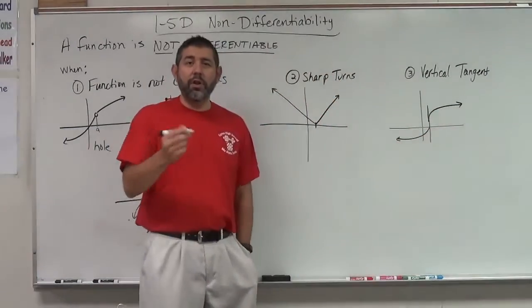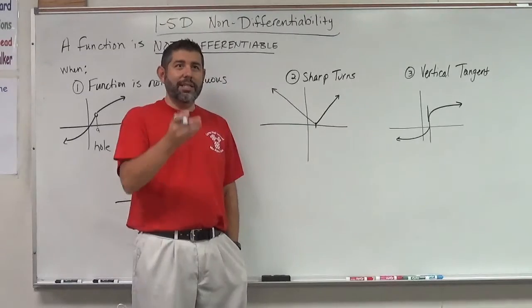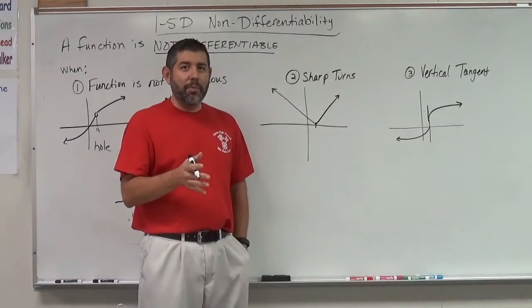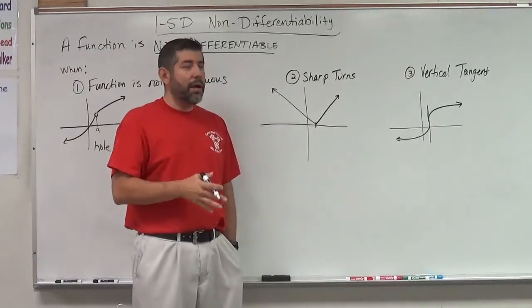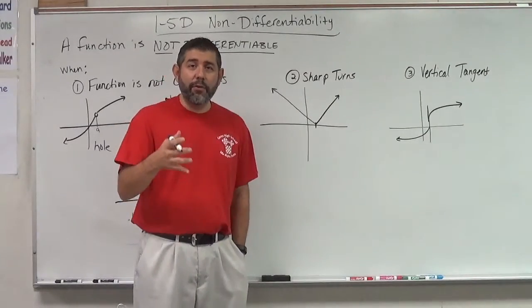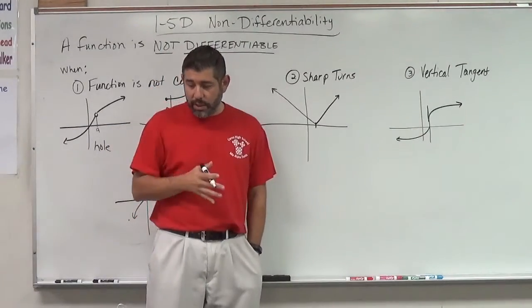And remember that the derivative is the slope of the tangent line. So if the tangent line is vertical, that doesn't have slope, right? That's not defined. So an undefined slope there is going to give us a non-differentiable function at that vertical tangent line.